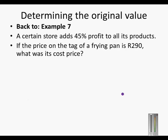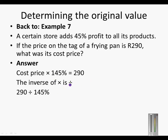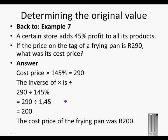Back to Example 7. Adding 45% to the cost price means we multiply the cost price by 145% to get 290 rand. The inverse of multiplying is dividing. So 290 rand divided by 145% — that is, 290 divided by 1.45 — gives us 200 rand.